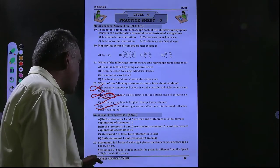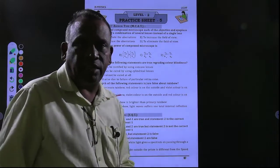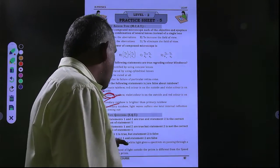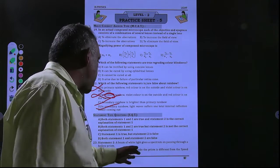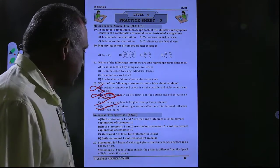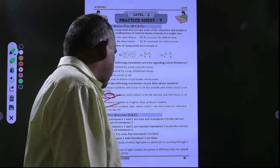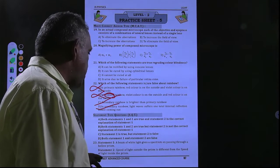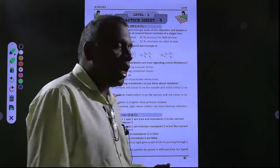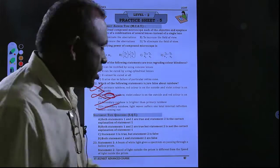In this question, statement 1 says: a beam of white light gives a spectrum on passing through a hollow prism. This is a false statement because it is a hollow prism — light passing through a hollow prism does not disperse to form a spectrum. Statement 2 says: the speed of light outside the prism is different from the speed of light inside the prism. Since the prism is hollow, inside and outside have the same medium, so that is also a false statement. Therefore both statements are false.